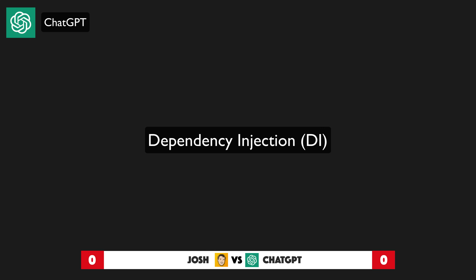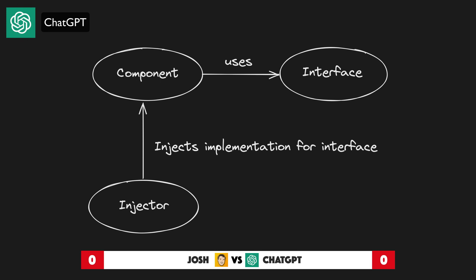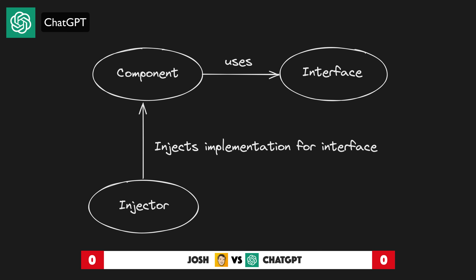Dependency injection — DI — is a design pattern and software architecture technique in which a component or object receives its dependencies from an external source rather than creating them itself. In Angular, DI is used to provide components with their dependencies rather than having the component create them itself. This helps to decouple the component from its dependencies, making the component easier to test, reuse, and maintain.